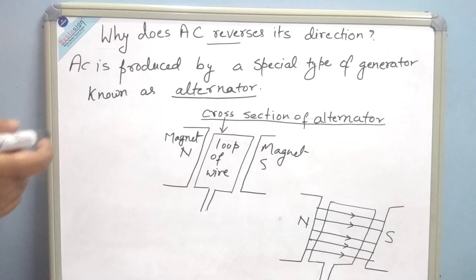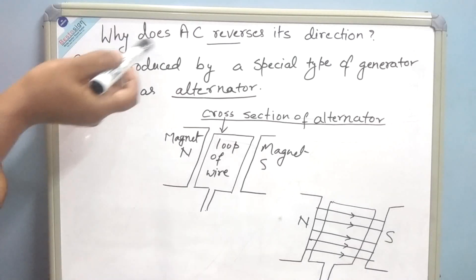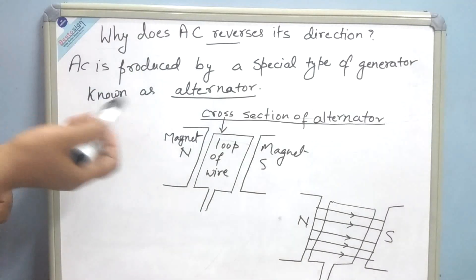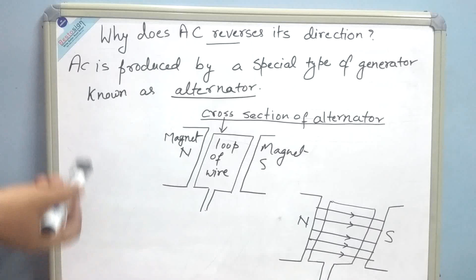AC current is the flow of electric charge which changes its direction periodically, meaning it reverses its direction periodically, whereas DC is the flow of electric charge which flows in one direction only. We always hear that AC reverses its direction, AC moves in positive and negative direction, but why? Why does AC reverse its direction?